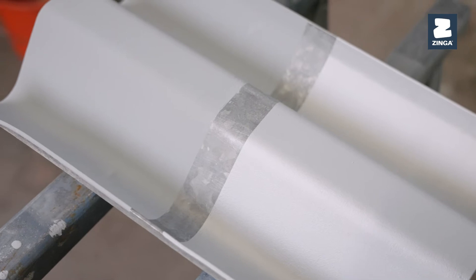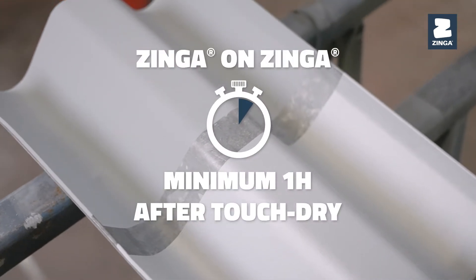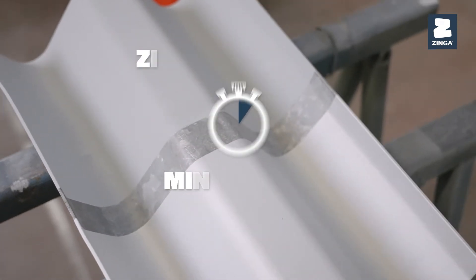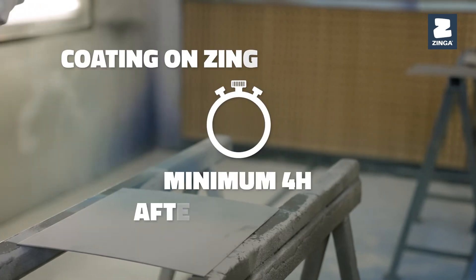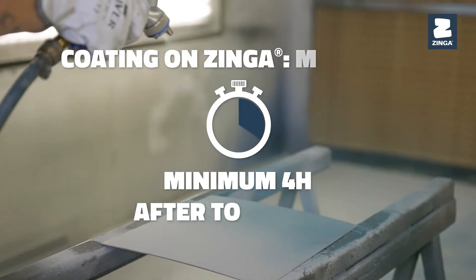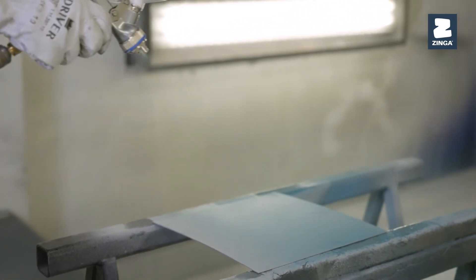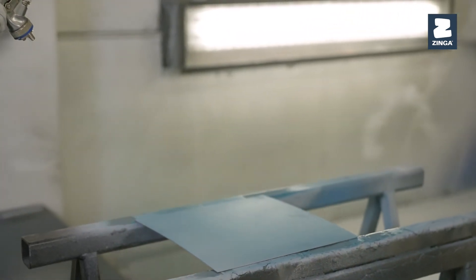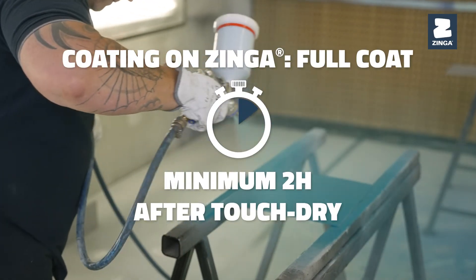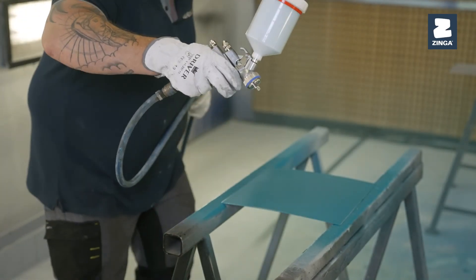A second layer of Zynga can be applied one hour after touch-dry of the first layer. To apply another coating on top of Zynga, wait a minimum of four hours and apply a thin, continuous mist coat of the required coating using spray or roller to seal the zinc layer. After two hours, the full coat can be applied.